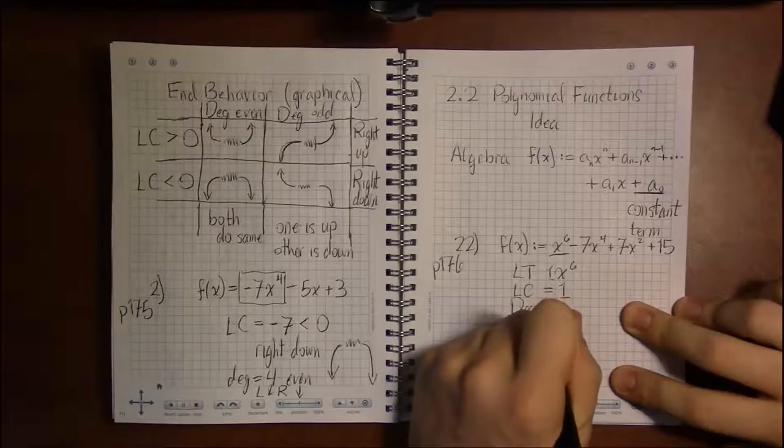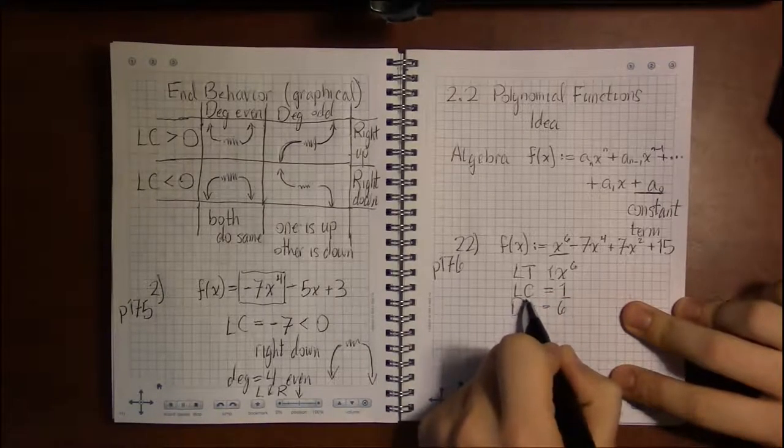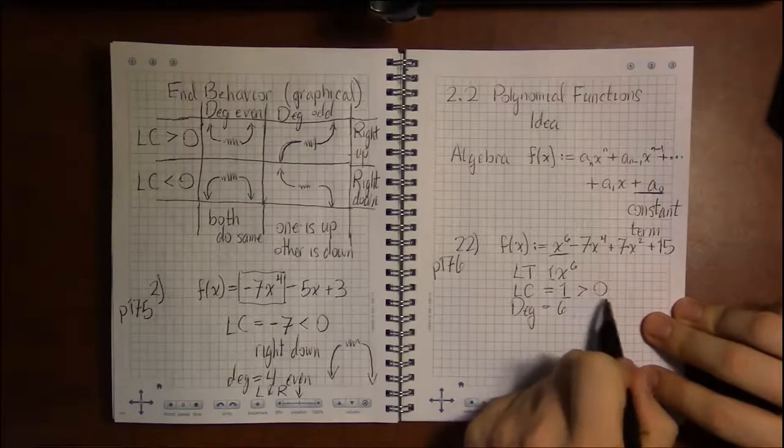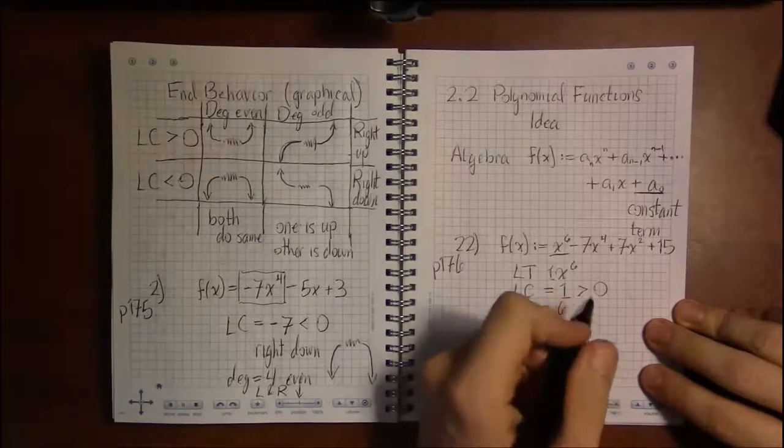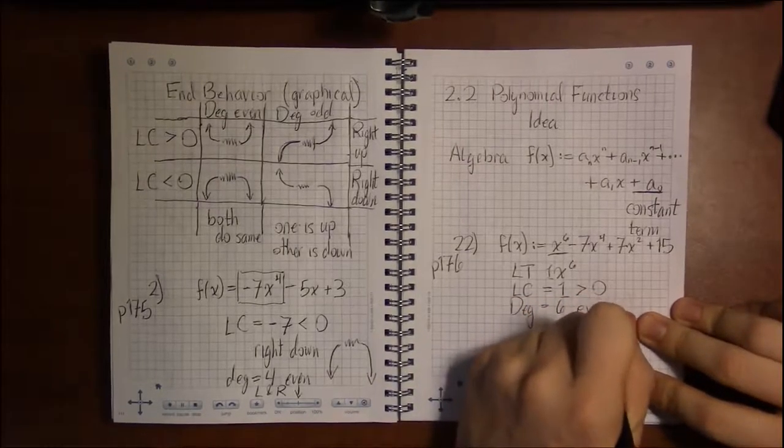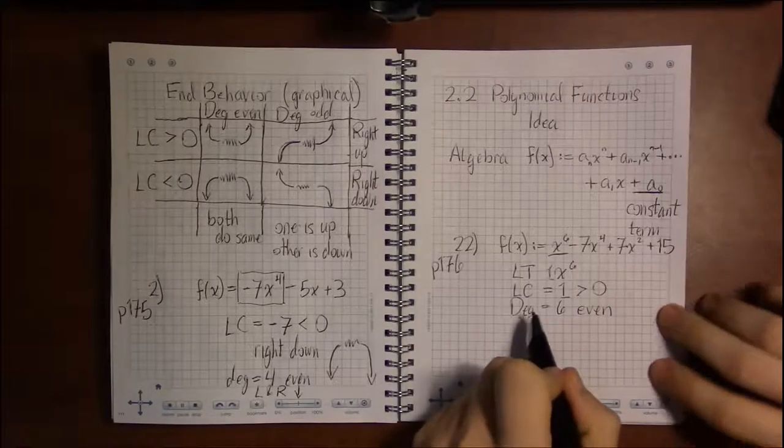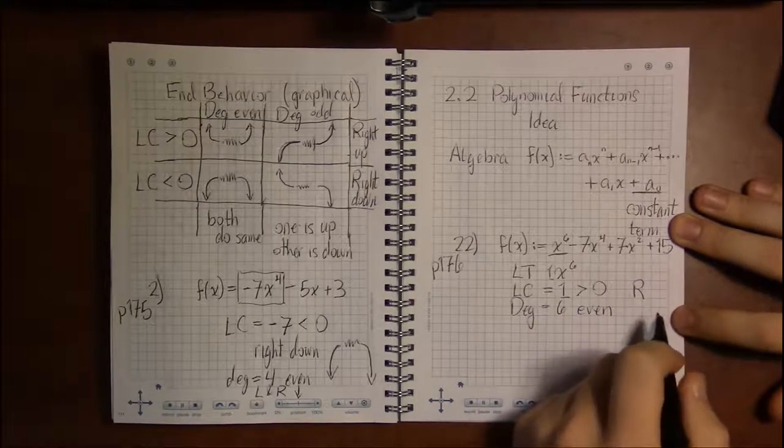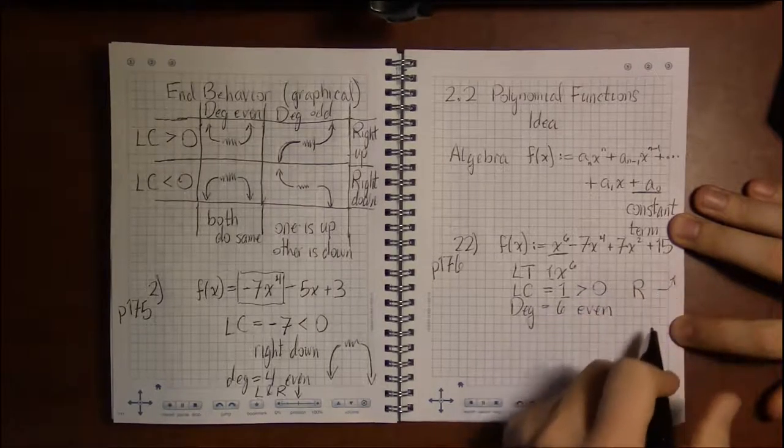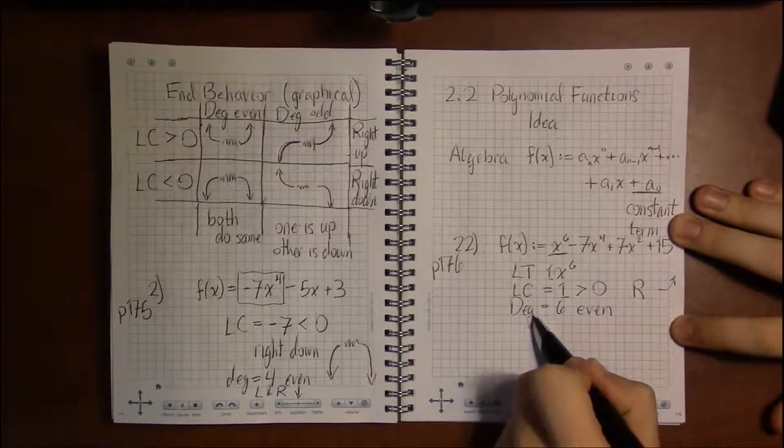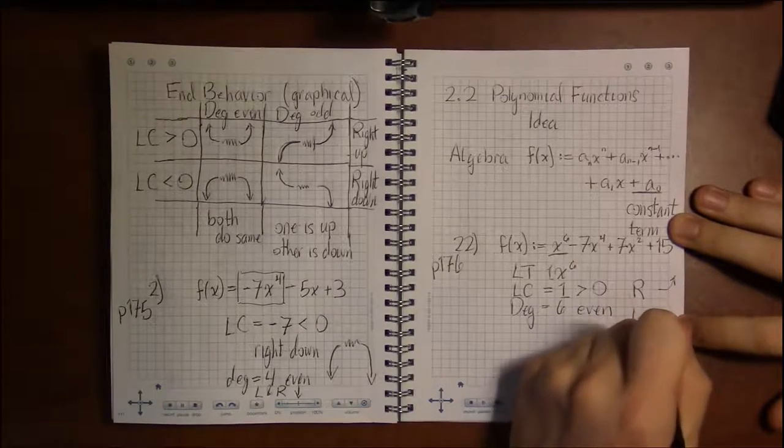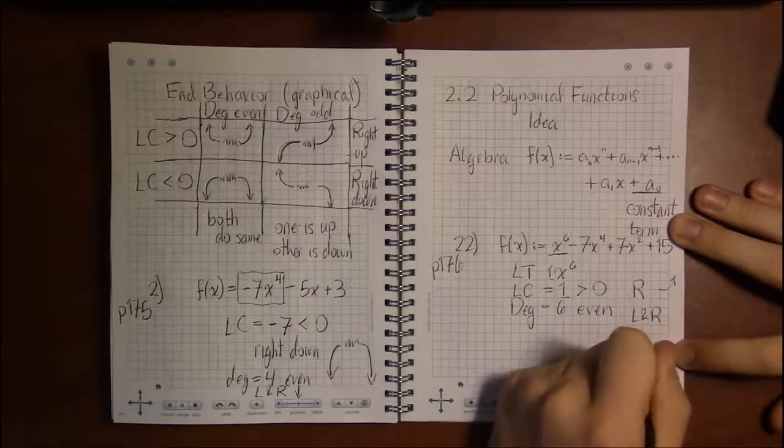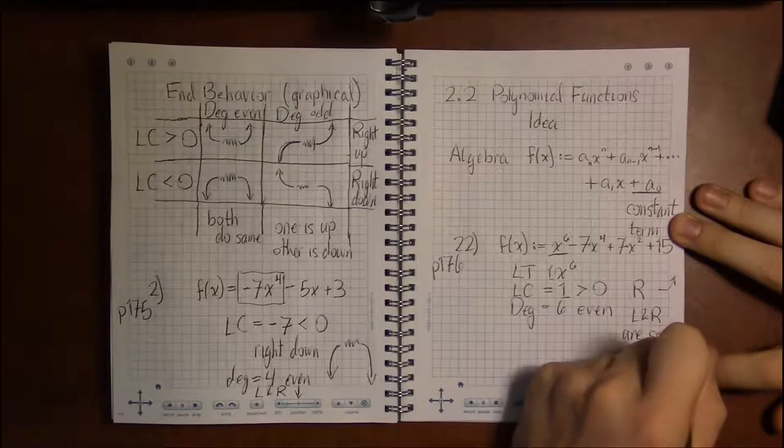And then the degree is the other number in the leading term—it's the exponent. So with the leading coefficient of 1, and what was important was whether the leading coefficient was positive or negative, ours is positive. What was important about the degree was that it was even. So with a positive leading coefficient, this tells us that the right end of the graph goes up. And the degree being even tells us that the left and right do the same thing, so they're both going to go up.